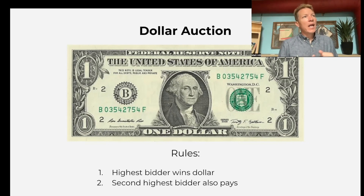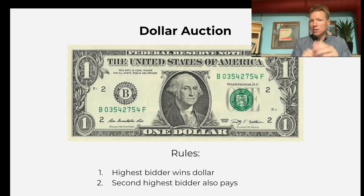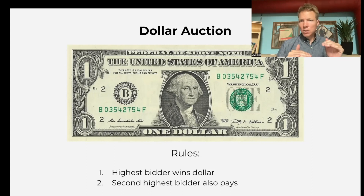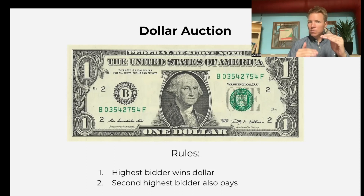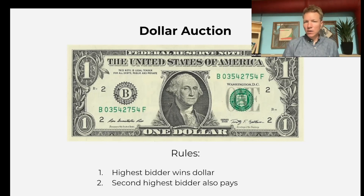Then you start the bidding, and usually the bids go up, up, up. When you get to around 90 or 95 cents, talk to the second highest bidder. Say the second highest bidder is at 90 cents — you're about to lose 90 cents. If you go to a dollar, above the high bidder at 95 cents, you'll give me a dollar but I'll give you a dollar. You'll be even.